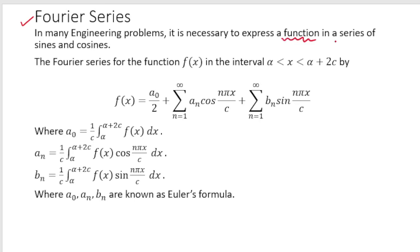In many engineering problems it is necessary to express a function in a series of sines and cosines. Fourier series gives us a way to express a given function in the form of a series containing sine and cosine terms. If you have a function f(x) and want to write its Fourier series expansion in the interval α to α+2c, the series is given by a₀/2 plus summation of aₙ cos(nπx/c) and summation of bₙ sin(nπx/c).